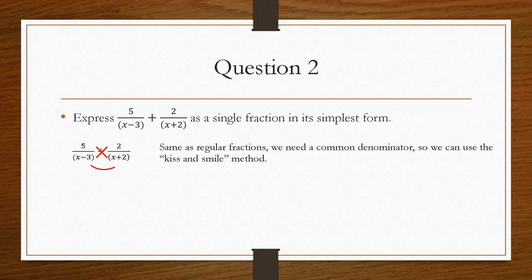So the kiss and smile is you multiply the first fraction top and bottom by x plus 2, and then the second fraction multiply it by x minus 3 top and bottom. So it will look something like this. That way, we have x minus 3, x plus 2, x plus 2, x minus 3 on the bottom of both fractions.